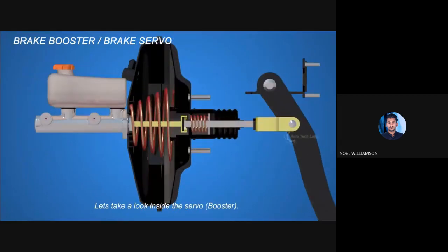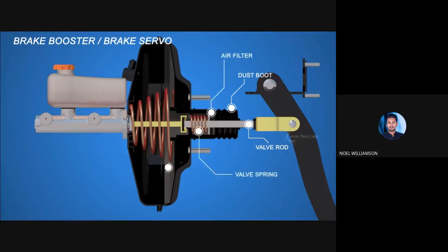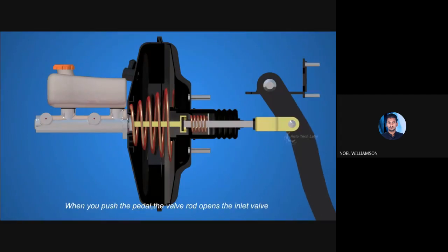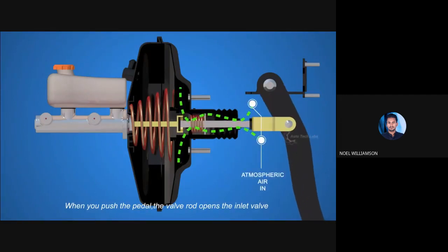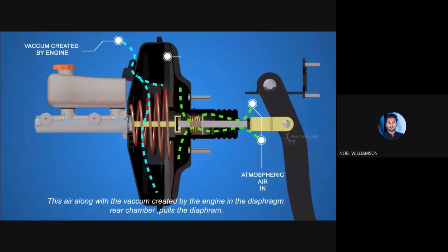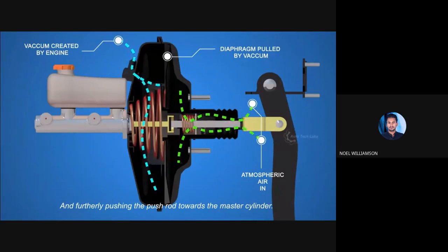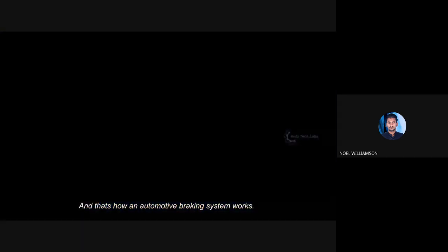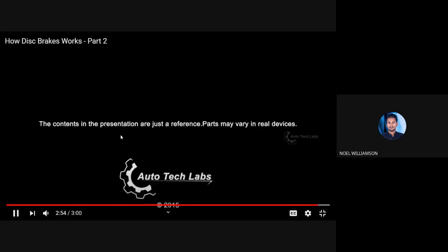The brake booster comes between the pedal and the master cylinder and utilizes vacuum from the engine, assisting the brake pedal and making it easier to apply brakes. Inside the servo there is a valve rod, dust boot, air filter, valve spring, diaphragm, diaphragm spring, vacuum check valve, and hydraulic push rod. When you push the pedal, the valve rod opens the inlet valve, allowing air into the diaphragm front chamber through the filter. This air, along with the vacuum created by the engine in the rear chamber, pulls the diaphragm and pushes the push rod towards the master cylinder, thus providing assistance and reducing the effort in braking.